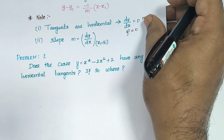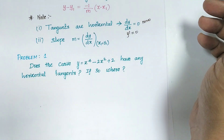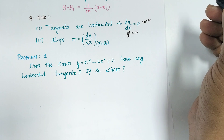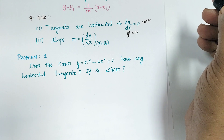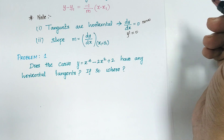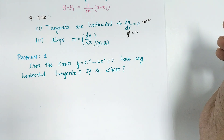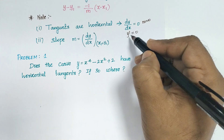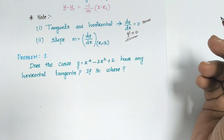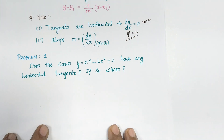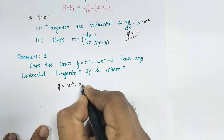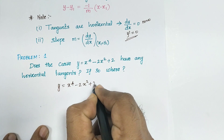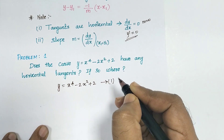Problem one: does the curve y equal to x power 4 minus 2x square plus 2 have any horizontal tangents? If so, where? It is a horizontal tangent, so horizontal tangent means you should remember y dash equal to 0. The given equation is y equal to x power 4 minus 2x square plus 2, which is equation number 1.